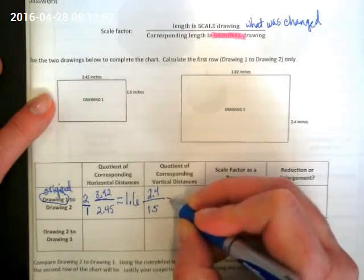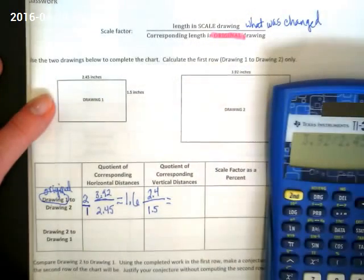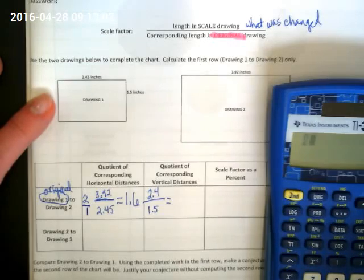And we're going to divide those. And we're hoping we get 1.6 again because that means we've got the same scale factor.